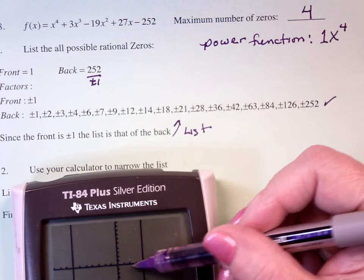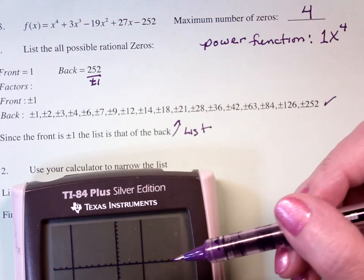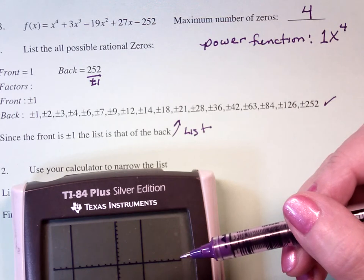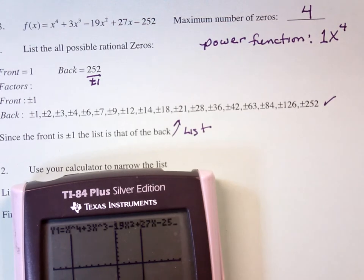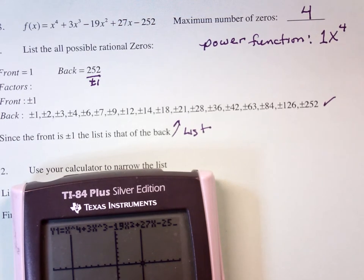And then 1, 2, 3, 4, positive 4. Is positive 4 in my list? Yep, so, trace, type in negative 7, it's a 0. Type in 4, it's a 0. So, those, I have two zeroes, negative 7 and 4.